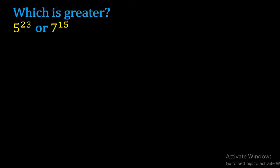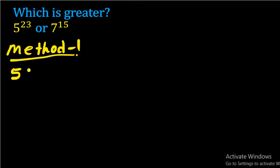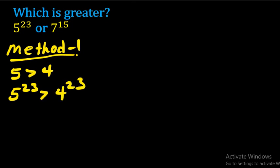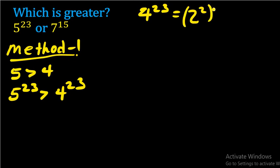Therefore we can have two different methods. For method one: we know five is greater than four, which means five to the power of 23 is greater than four to the power of 23. But four by itself is two to the power of two, therefore four to the power of 23 means two to the power of two, the whole raised to the power of 23.